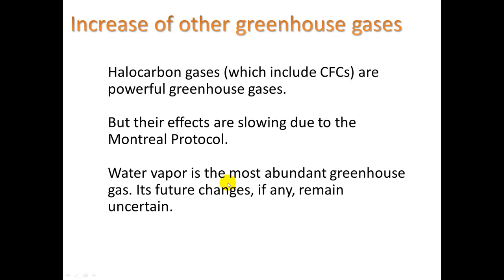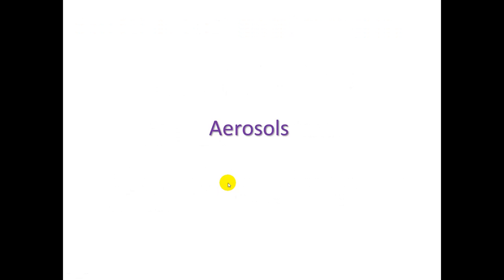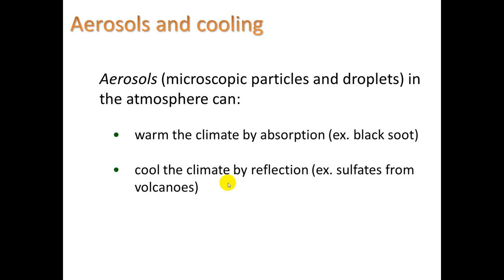So we already talked about that, Montreal Protocol. Aerosols. They can also affect the global temperature. They are microscopic particles and droplets in the atmosphere that can warm the climate by absorption. If you think about black soot from burning fuel going off into the environment or from a volcano. They can also cool the climate by reflection. If you get sulfate aerosols, which are reflective, then they will actually reflect more light into space, causing a cooling effect.